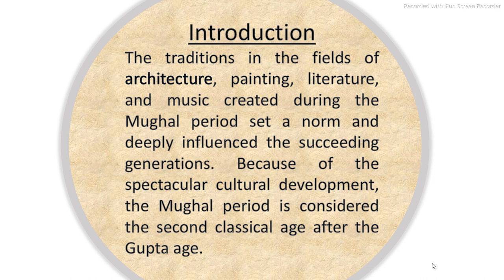The traditions in the fields of architecture, painting, literature and music created during the Mughal period set a norm and deeply influenced the succeeding generations. Because of the spectacular cultural development, the Mughal period is considered the second classical age after the Guptas.